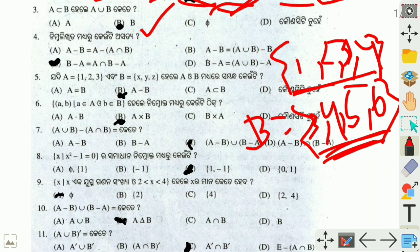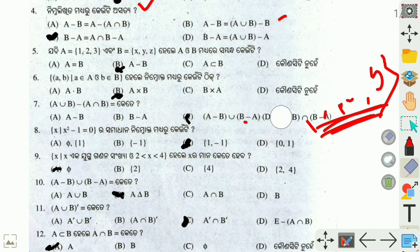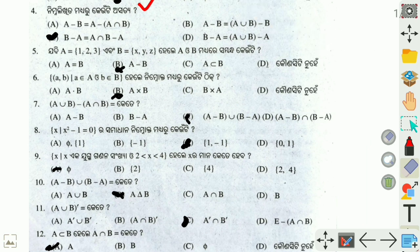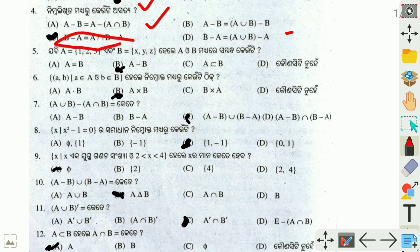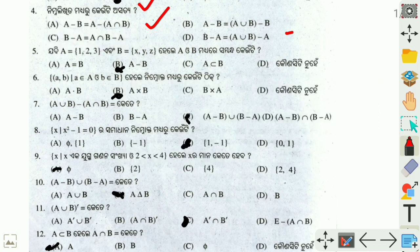The answer for A union B gives us the result. Next, look at this formula: A minus B is equal to A minus A intersection B. Similarly, B minus A follows the same pattern. These are important set difference formulas.